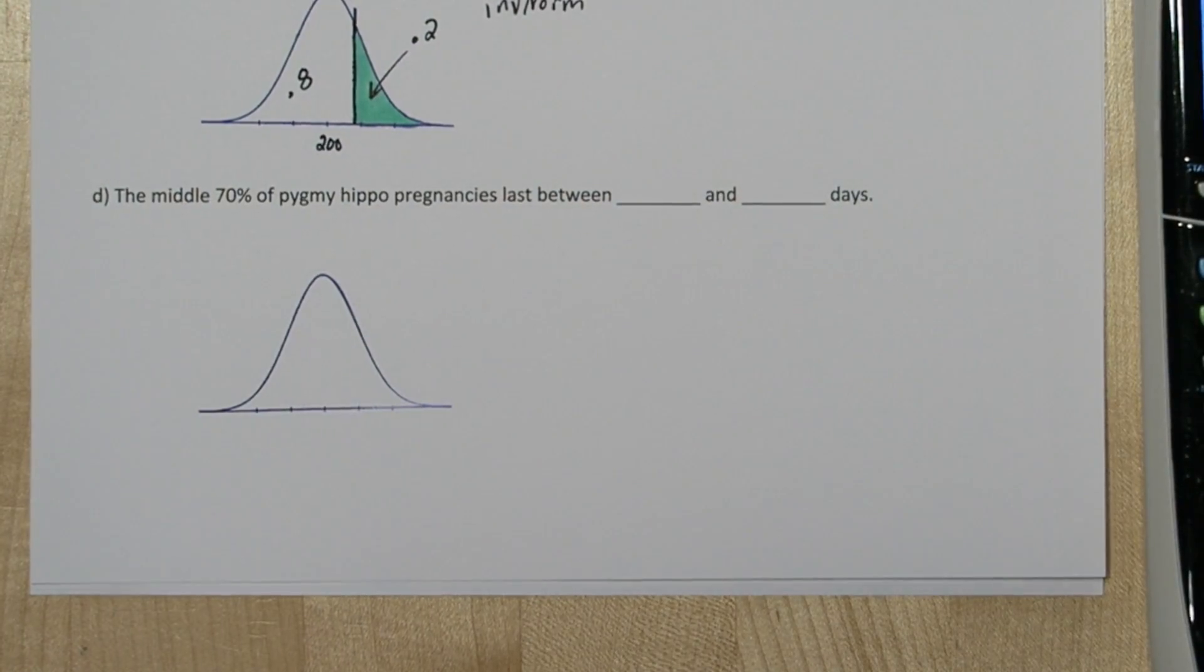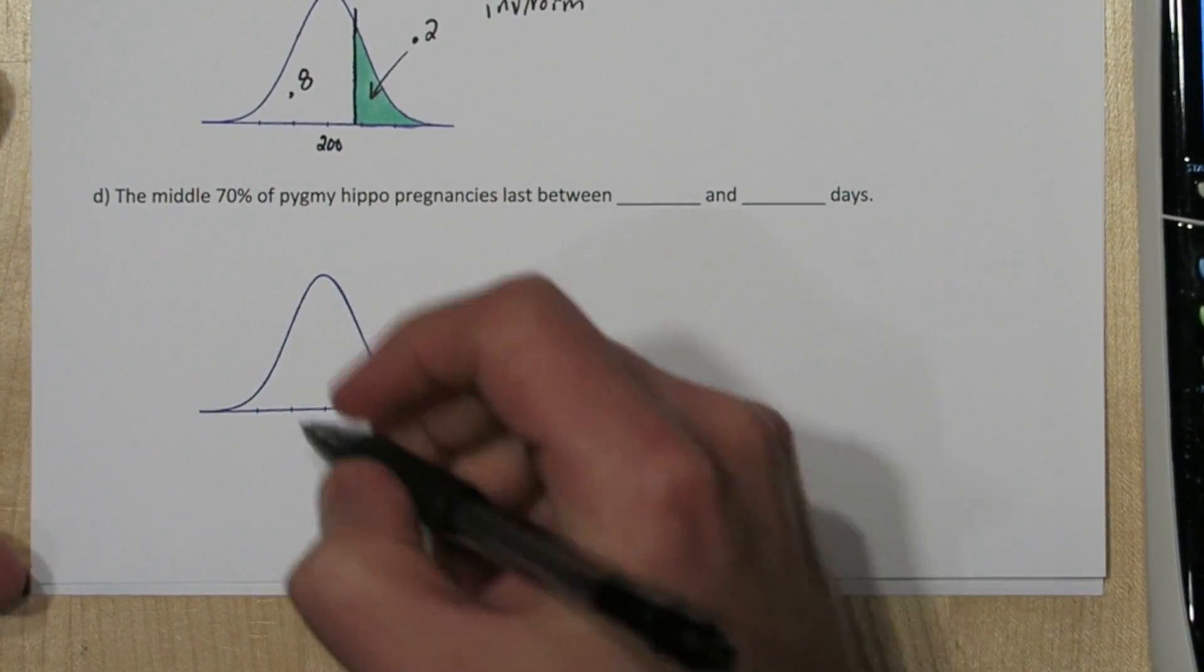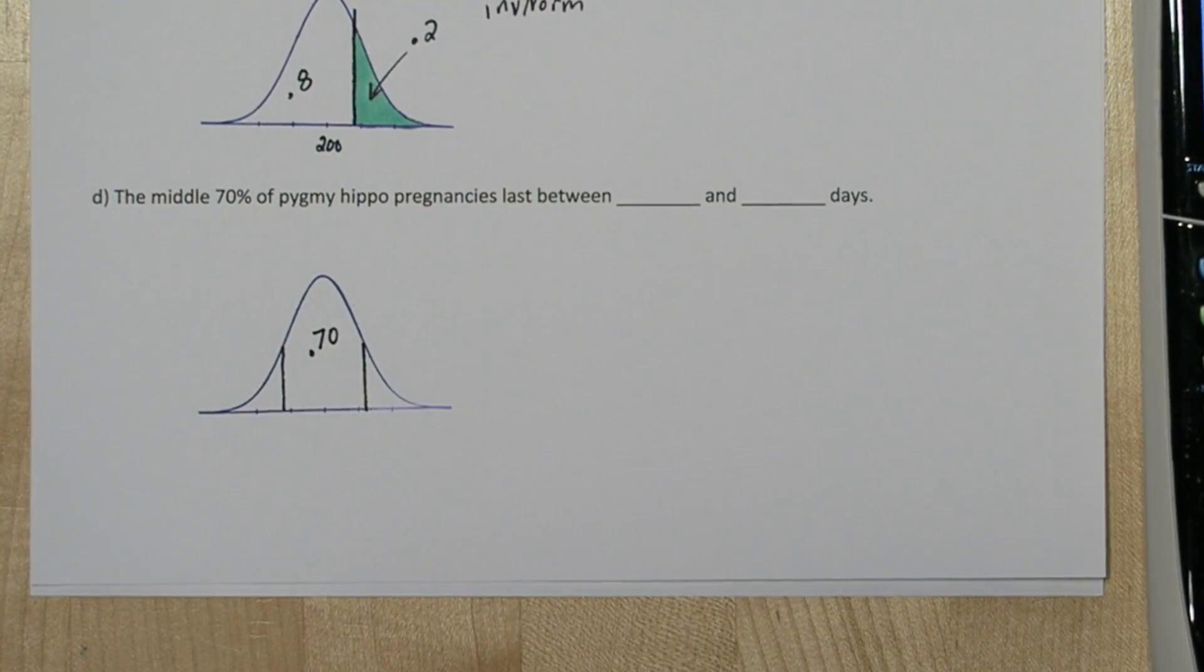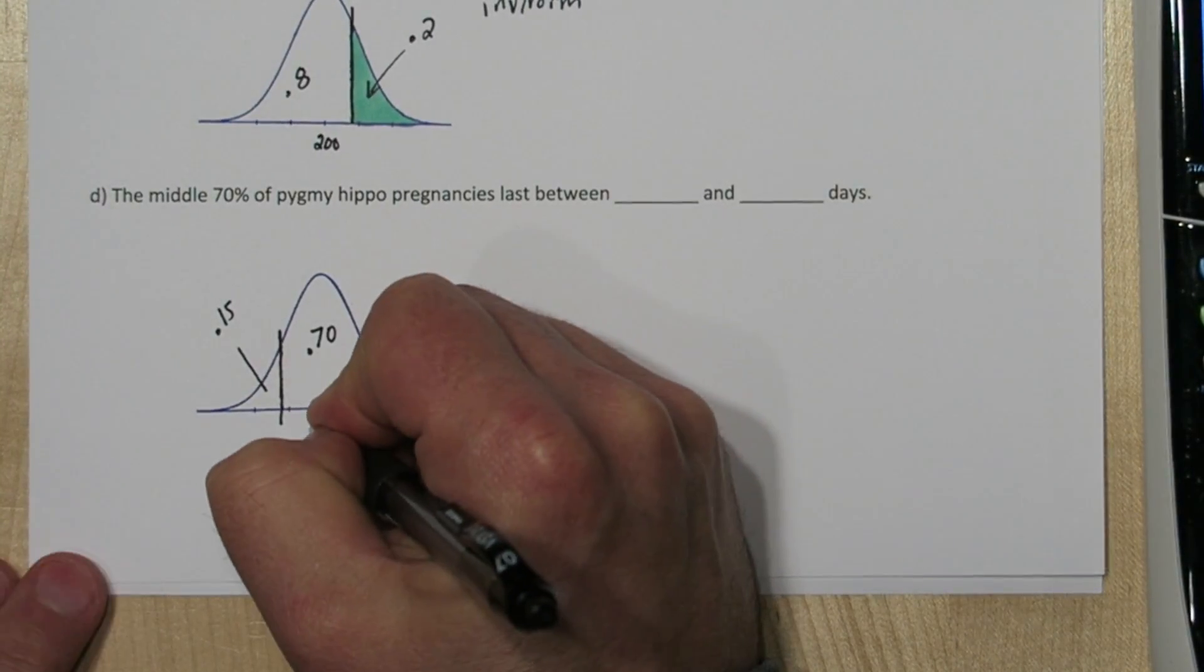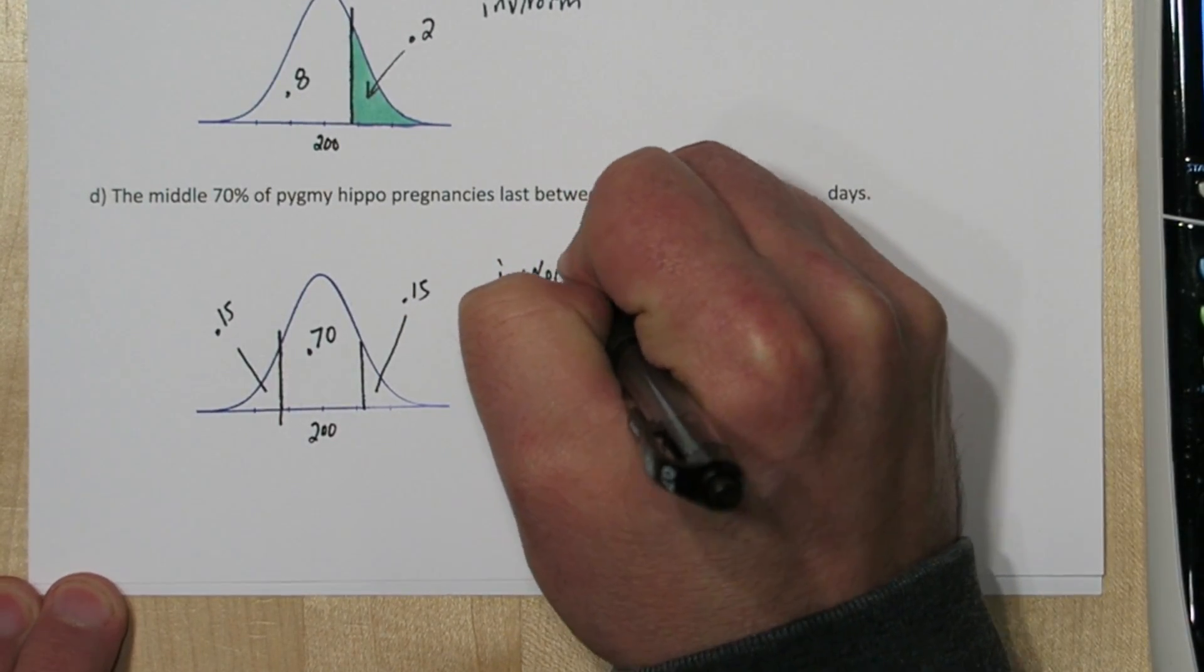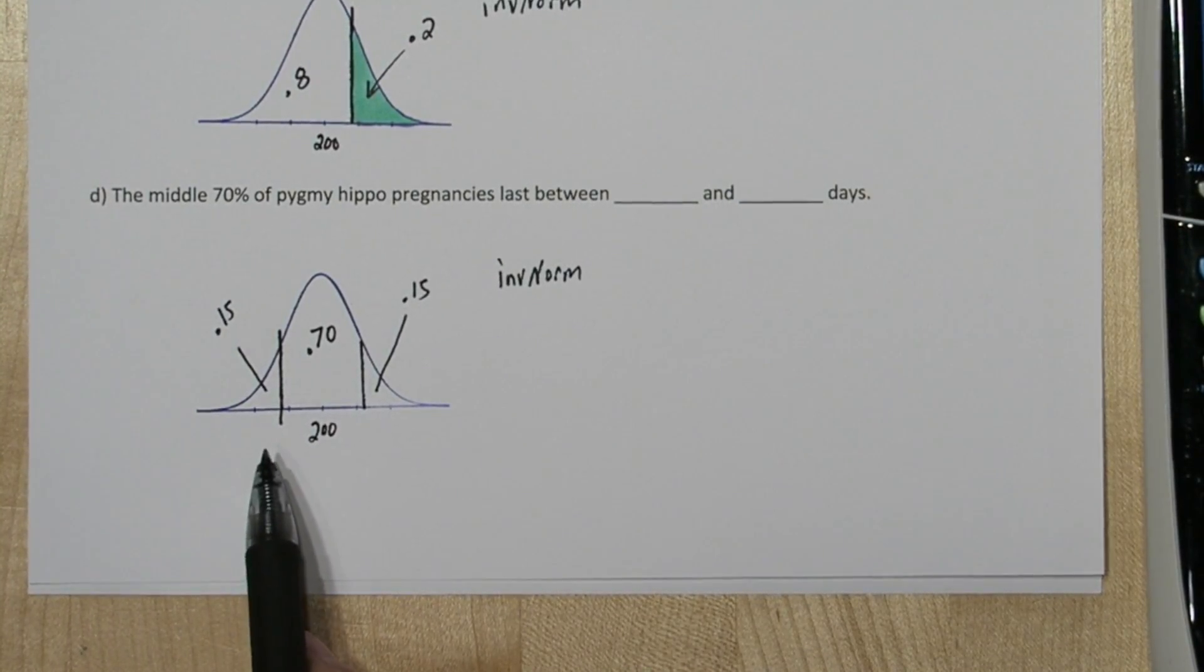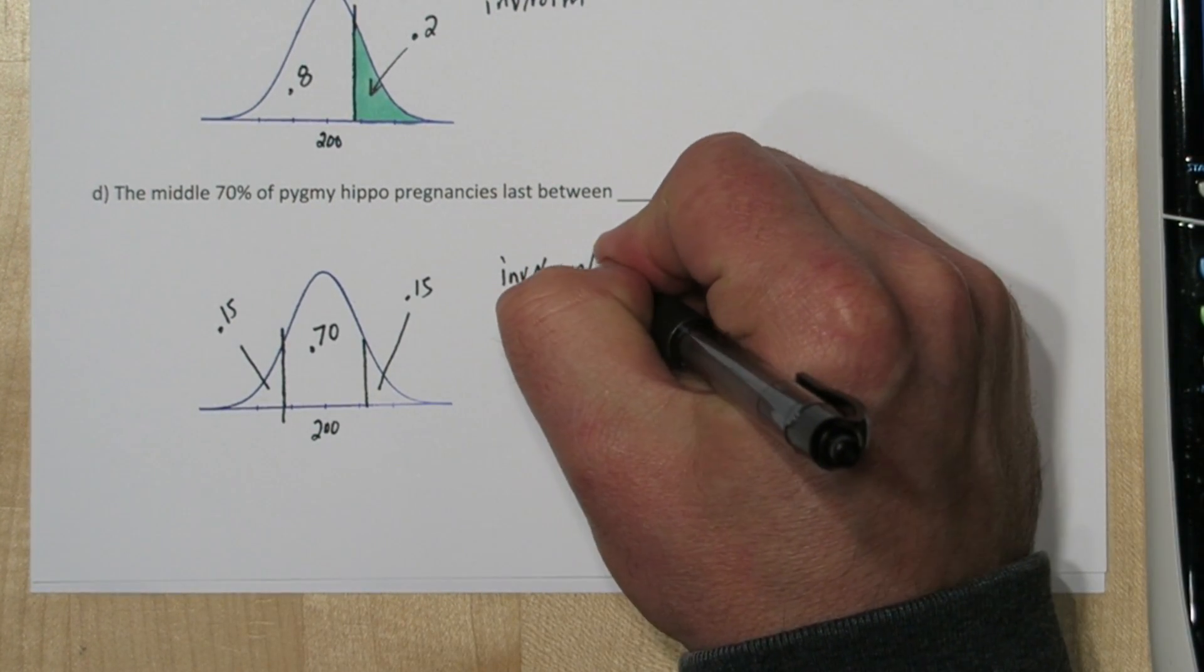Now on this last one, we're also given an area. But we want the middle 70%. If we cut off the middle 70%, that means in each of these tails we have 15%. So let's start by finding this first cutoff value right here. And again, we know the middle is 200. That's the mean. So to figure out this cutoff area, how much area is to the left of it? It turns out 15%.